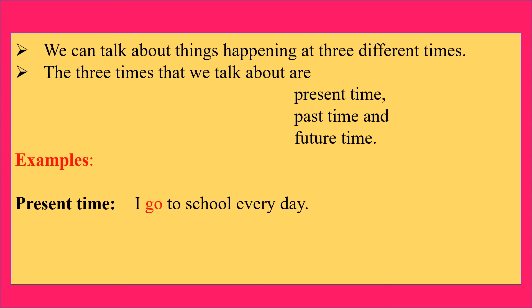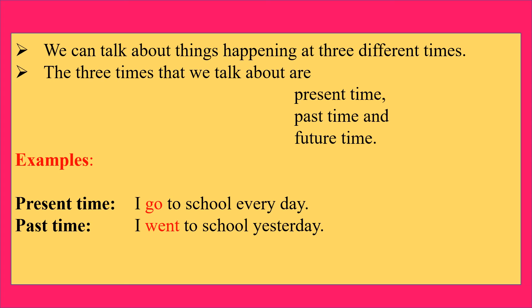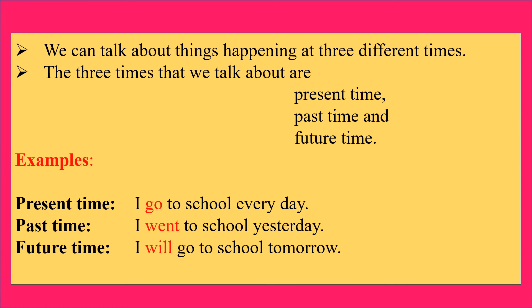Present time example: 'I go to school every day.' Note the highlighted words — 'go' shows present time, 'went' shows past time, and 'will go' shows future time. The past form of 'go' is 'went', and the future form is 'will go'.